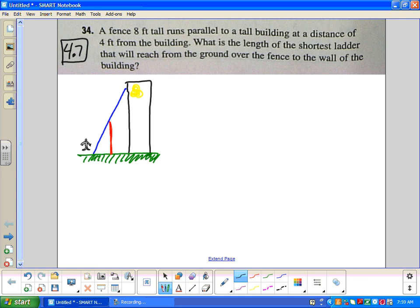A fence 8 foot tall runs parallel to a tall building at a distance 4 feet from the building. What is the length of the shortest ladder that will reach the ground over the fence to the wall of the building?